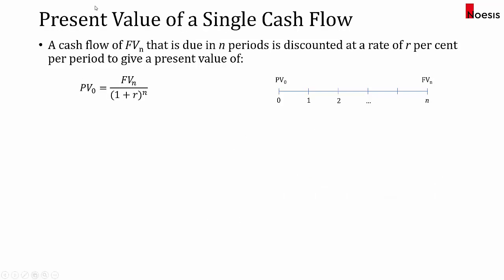Next, we'll look at the present value of a single cash flow. If we have a cash flow in the future at time N and we want to find the value of that cash flow today, we rearrange the formula. PV at time 0 equals the future value at time N divided by (1 + r) to the power of N.